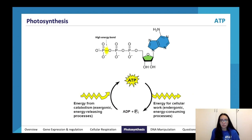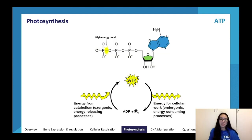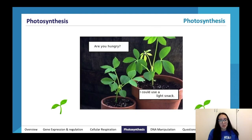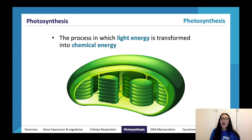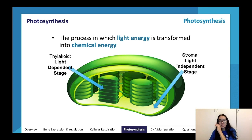Photosynthesis is the process in which light energy is transformed into chemical energy. This is a really big part of the study design, so you do need to know it in quite a bit of detail. Thylakoids are where the light-dependent stage of photosynthesis occurs. Around the thylakoids is the stroma — the fluid-filled space — where the light-independent stage occurs. So there are two stages of photosynthesis: the light-dependent and light-independent stages, separated by where they actually occur.